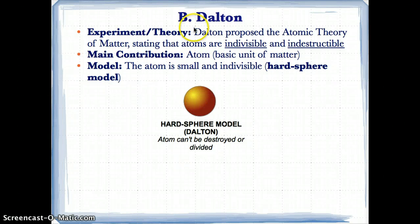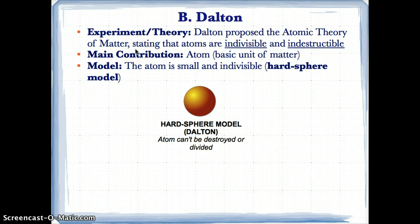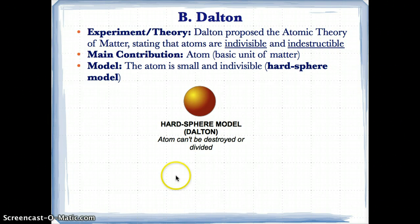The first scientist was Dalton. He proposed the atomic theory of matter and stated that atoms are indivisible and indestructible — meaning atoms cannot be divided and they cannot be destroyed. His atomic theory of matter stated that atoms were indivisible and indestructible.